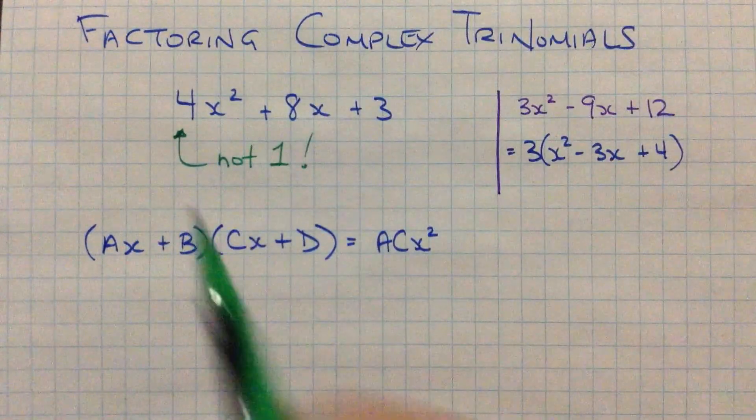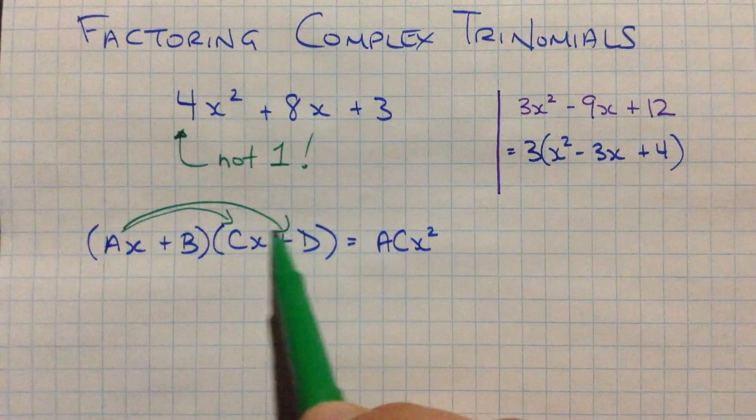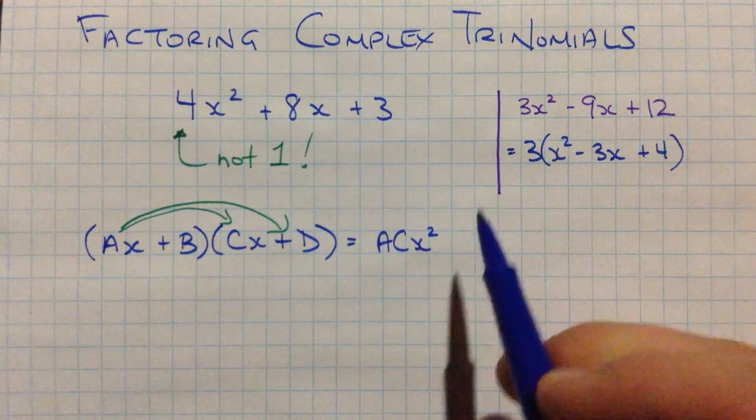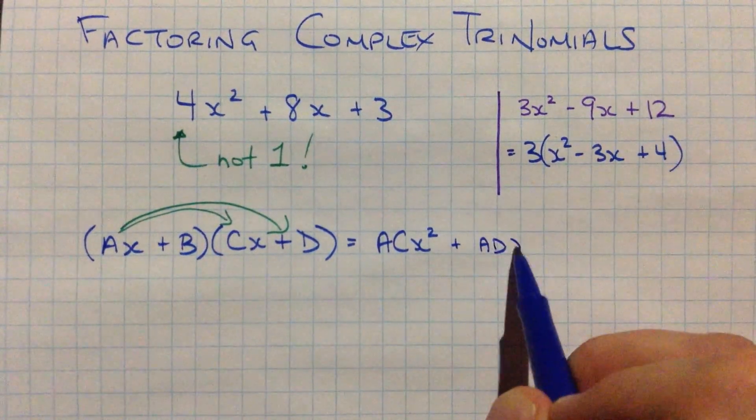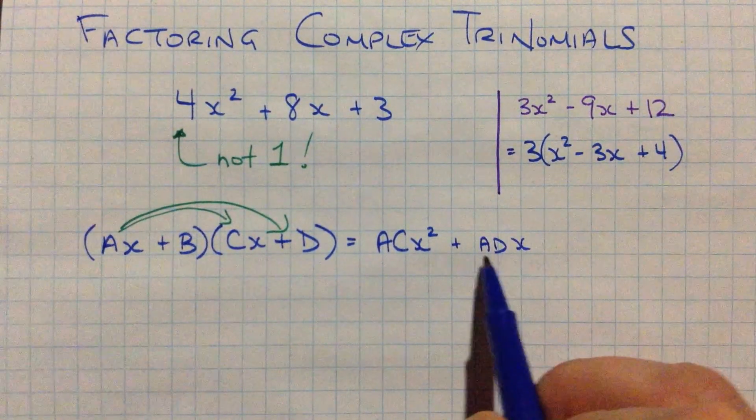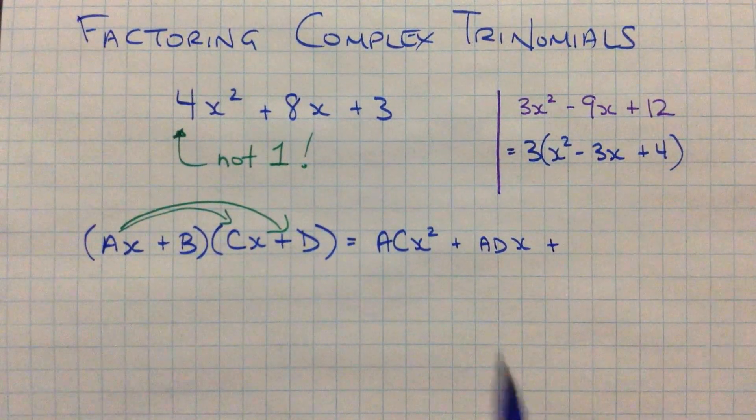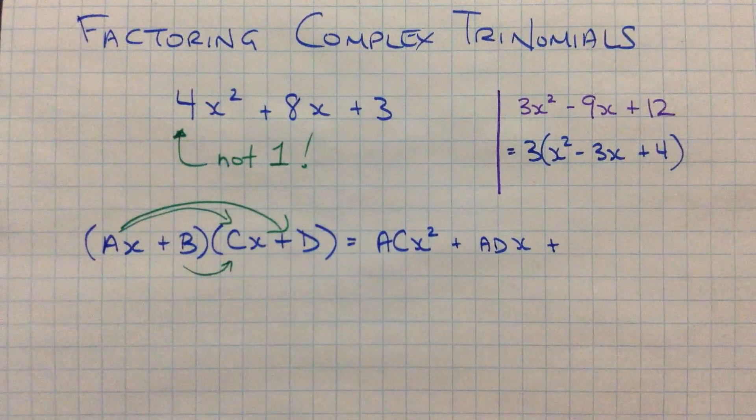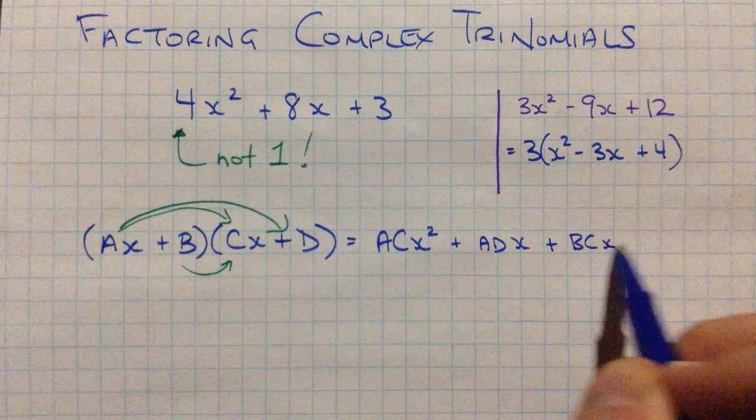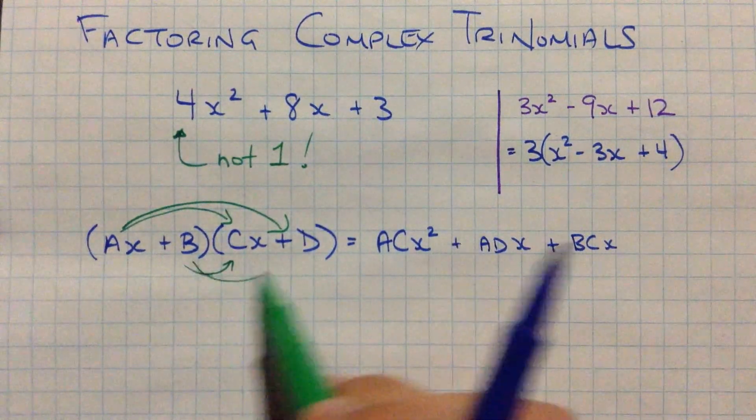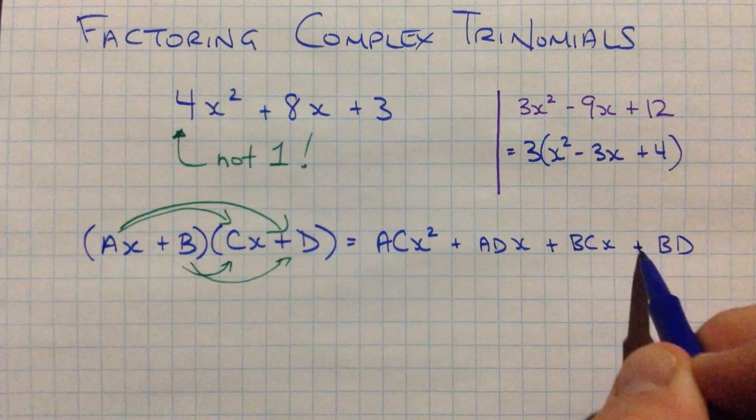That's multiplying AC, ax times cx, and then I'm going to multiply ax times d, so plus AD times x. Now these are just values, right? So a times d is going to be some number, plus let's do b times cx, which is going to be b times c times x, and last b times d is BD.